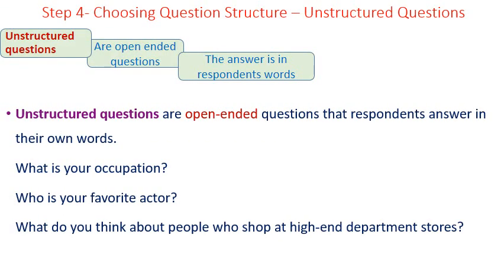Step number four: choosing question structure. We start with unstructured questions. They are open-ended questions where the answer will be in the respondent's own words. Examples include: 'What is your occupation?', 'Who is your favorite actor?', brand name, and so on.